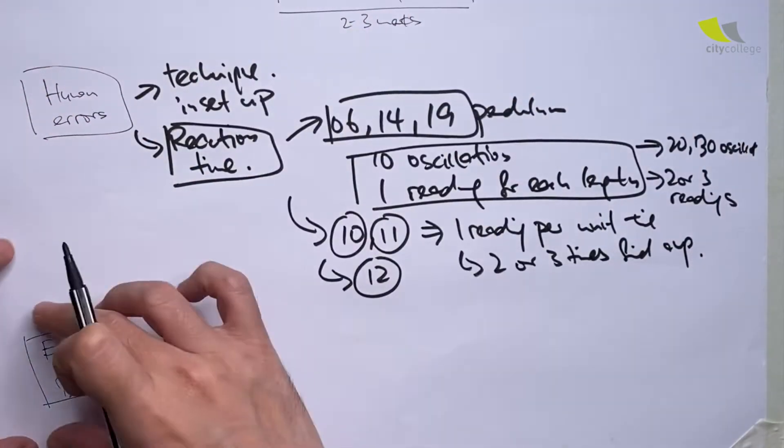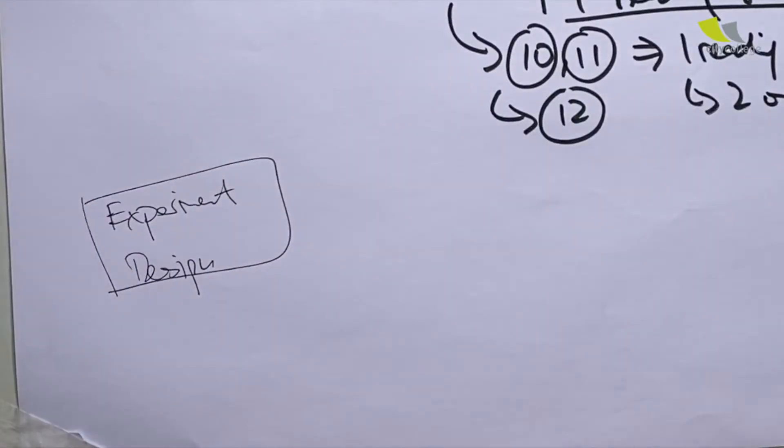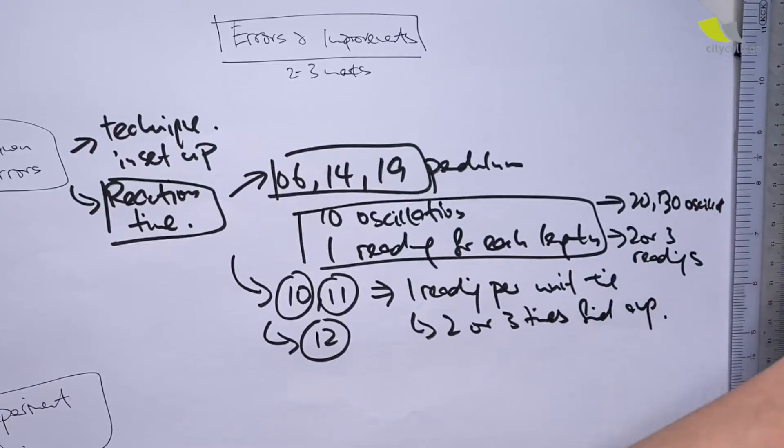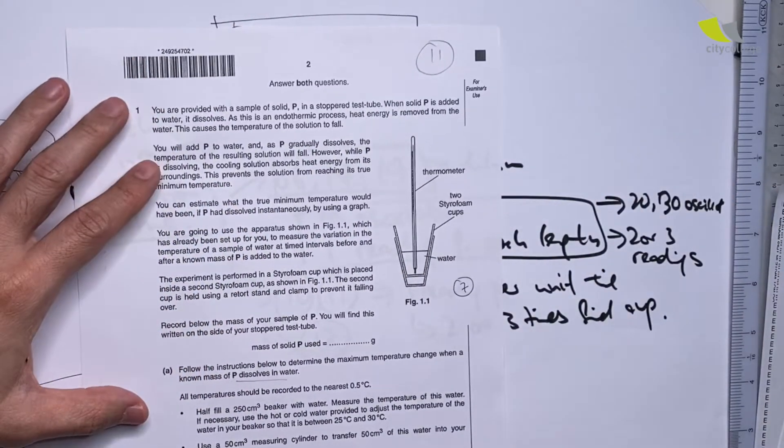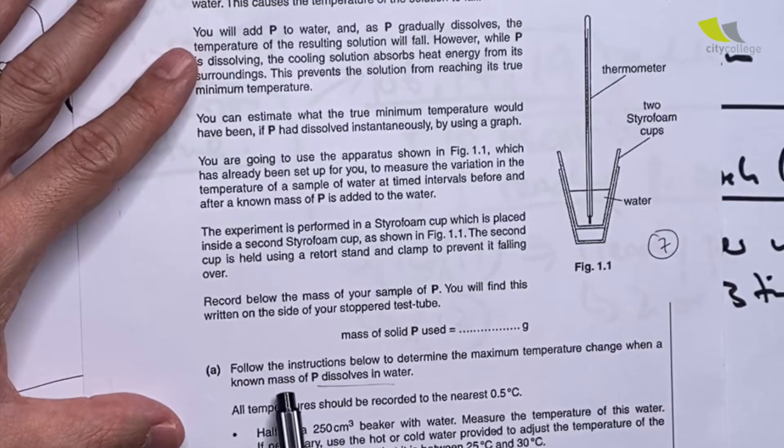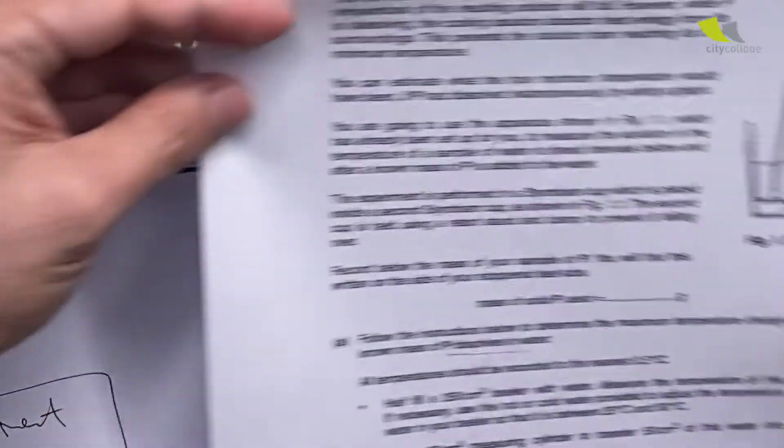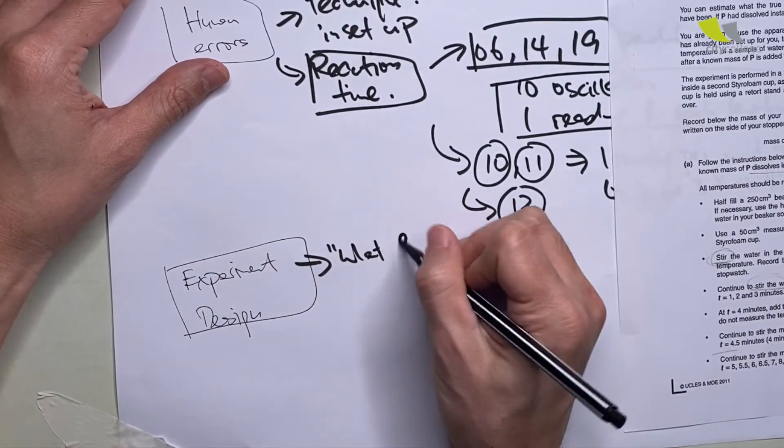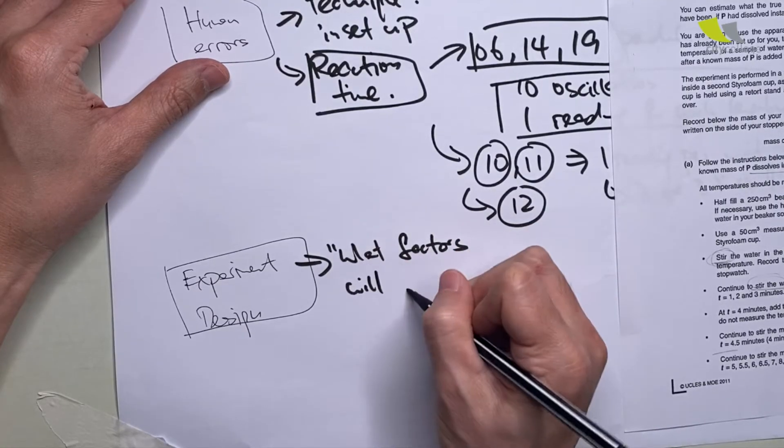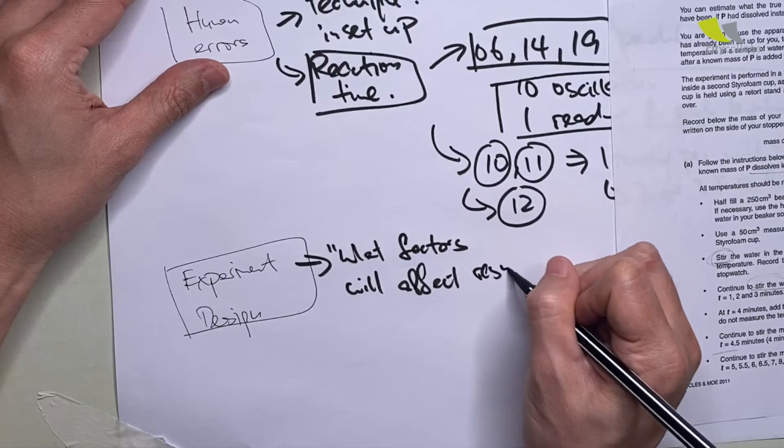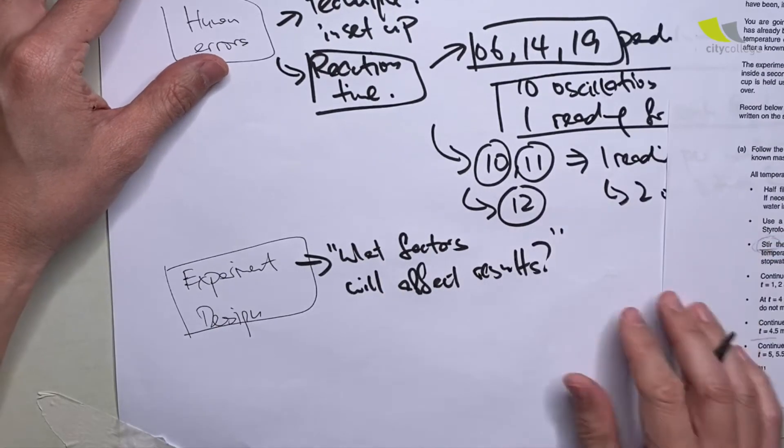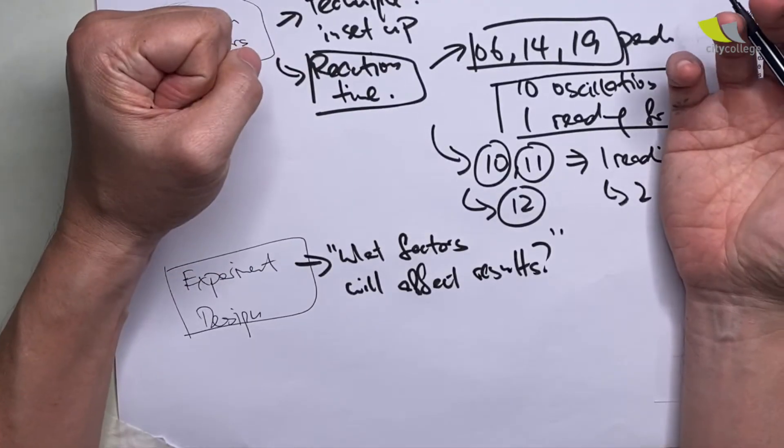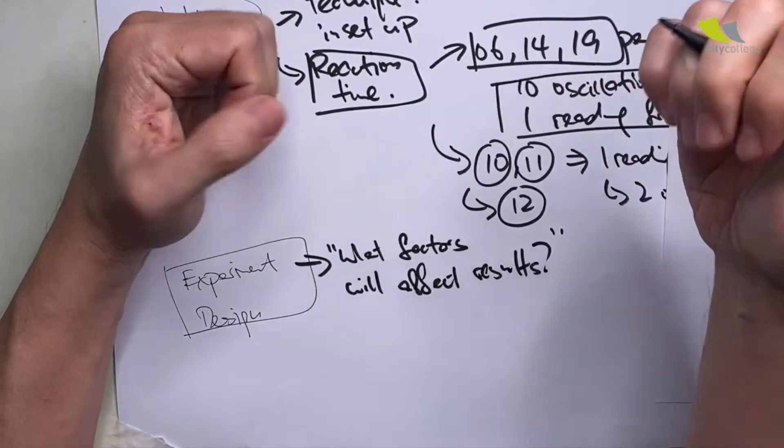The next group is experiment design, which has to do with the design of the experiment itself. Let me show you the 2011 paper. You are supposed to find the maximum temperature change as a mass of P dissolves in water. For this type of error, the main question you ask is: what factors will affect results?